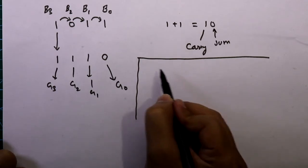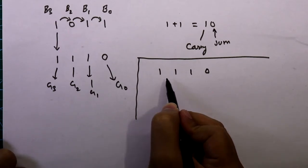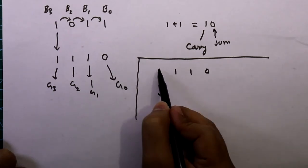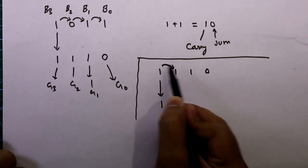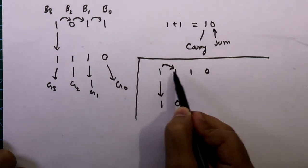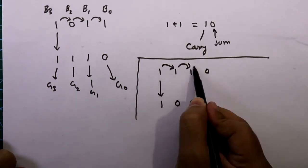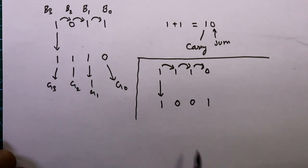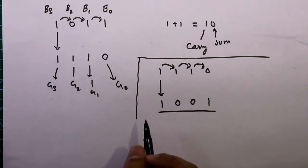Let's see another example: 11110. Write the MSB as it is, then add it to the next bit — the sum is 0 and we neglect the carry. 1 plus 1 equals 10, again write the sum. Then 1 plus 0 is 1. So this is our required gray code.